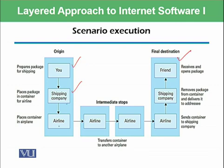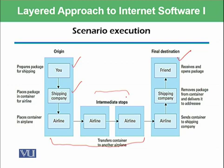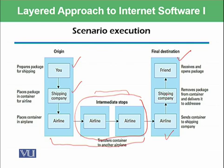That shipping company gives the packet to an airline. The airline places the container in the aeroplane, and there could be different airlines involved — these are the intermediate stops. If the packet is being sent to Switzerland, it may go via Lahore to Karachi, then from Karachi to Dubai, then to some other destination in Europe, and finally to Switzerland. Then it arrives at the final airline stop belonging to Switzerland, and that airline gives the packet back to the shipping company of that country.